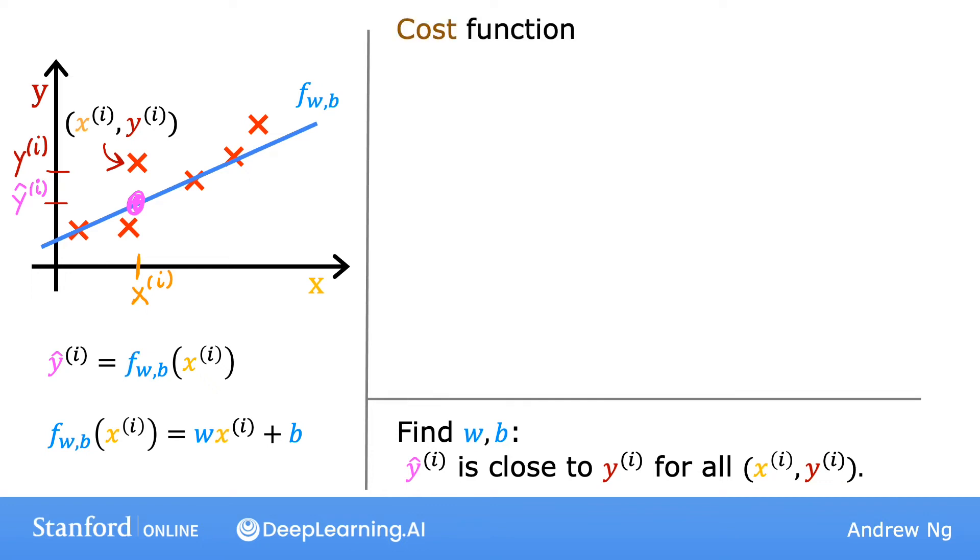The cost function takes the prediction y hat and compares it to the target y by taking y hat minus y. This difference is called the error. We're measuring how far off the prediction is from the target. Next, let's compute the square of this error. Also, we're going to want to compute this term for different training examples i in the training set. When measuring the error for example i, we'll compute this squared error term. Finally, we want to measure the error across the entire training set. In particular, let's sum up the squared errors like this.